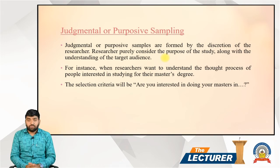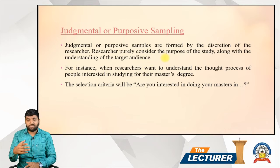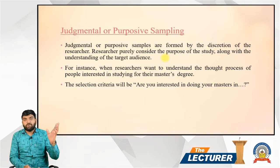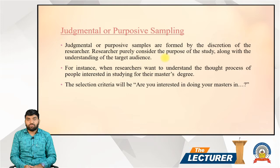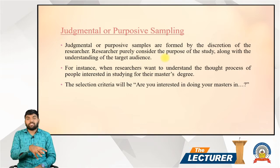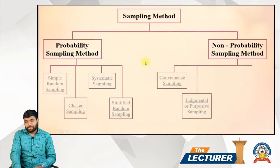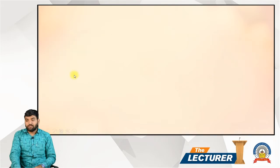For example, asking how many students want to pursue a master's degree in a particular field — whether MCom, MBA, MSc, or MBBS. The researcher uses judgment to select respondents who fit the purpose. This individual selection based on purpose is what makes it judgmental or purposive sampling.